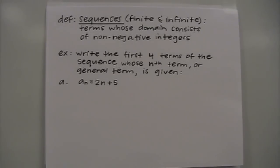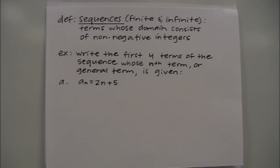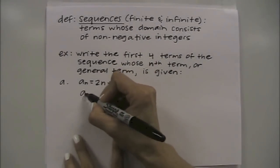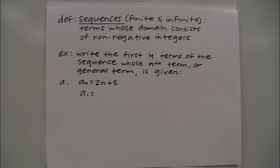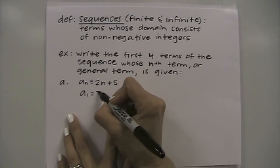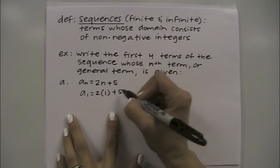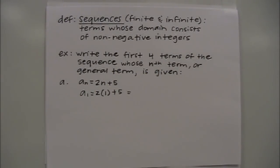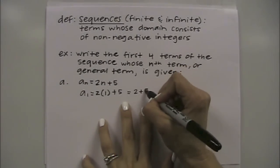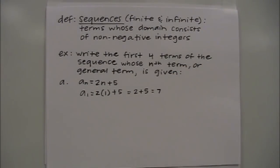The first example: write the first four terms of the sequence whose nth term or general term is given. Part A says a sub n equals 2 times n plus 5. We want the first four terms of the sequence. Unless otherwise specified, you always start by plugging in 1. So we start with a sub 1 — plug in 1 for n — and simplify using order of operations. For our first term we get 7.